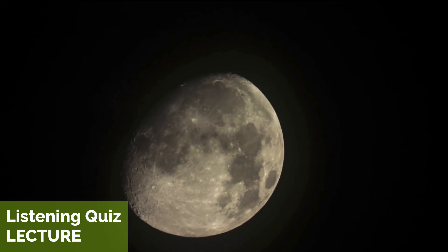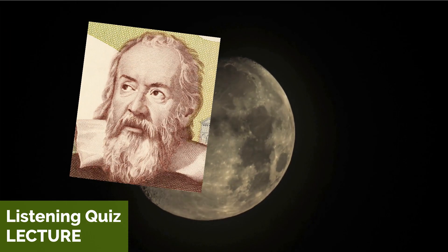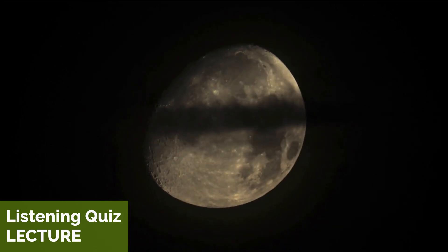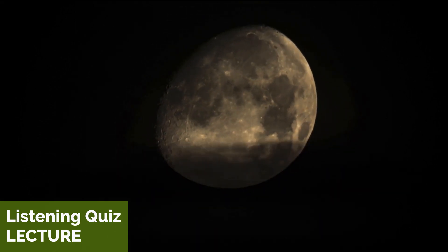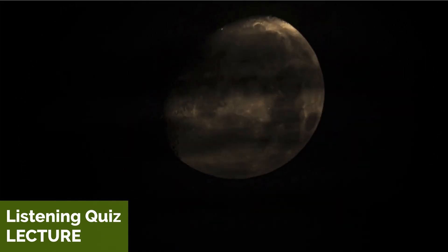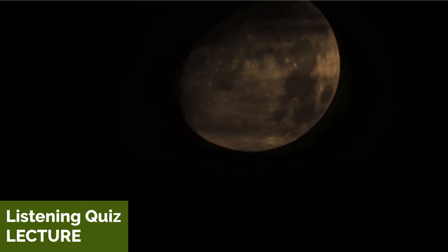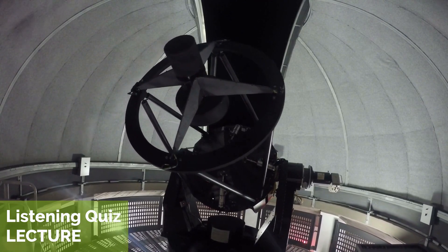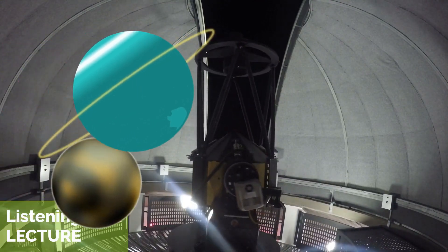When Galileo first pointed his telescope towards the heavens in 1610, he made a shocking discovery. The moon, and all the other planets in our solar system, were not just pretty lights in the sky — they were entire worlds. Soon afterwards, scientists began to theorize the existence of other worlds, or planets, orbiting around other stars. We now call these planets extrasolar planets, or exoplanets.